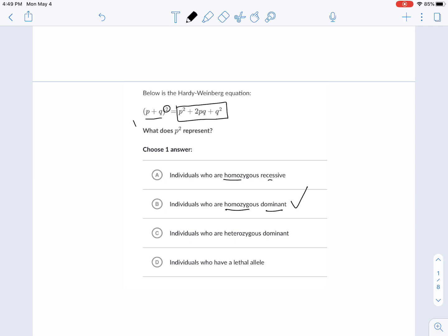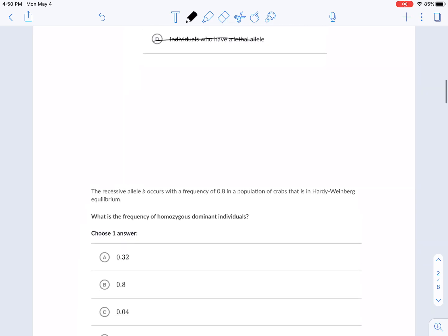Homozygous recessive would be what? Hopefully Q squared. You got that. Hetero means different. Remember that that one's a little special. 2PQ, the lethal allele. We're not talking about any special situation. You don't know if it's lethal or not. That's a dumb answer.